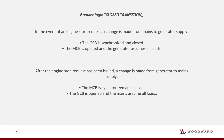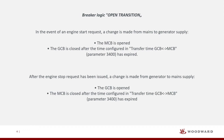Breaker logic closed transition: in the event of an engine start request, a change is made from mains to generator supply. The GCB is synchronized and closed. The MCB is opened and the generator assumes all loads. After the engine stop request has been issued, a change is made from generator to mains supply. The MCB is synchronized and closed. The GCB is opened and the mains assume all loads.